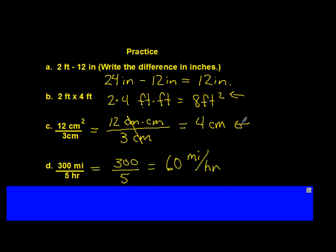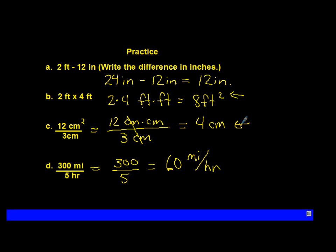And on letter D, we have two different units of measure. So we really can't cancel out there. 300 divided by 5 is 60. You end up with 60 miles per hour.